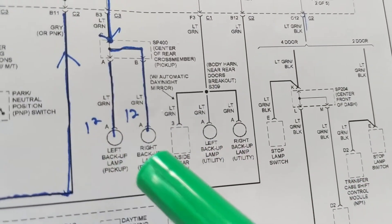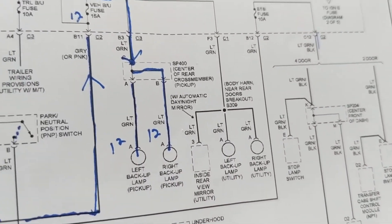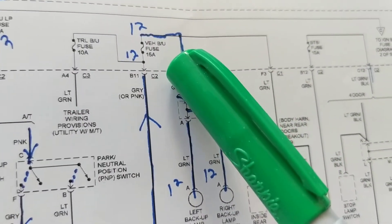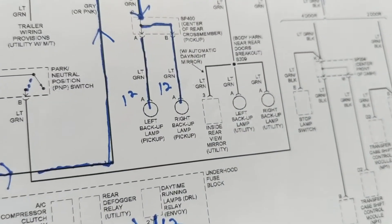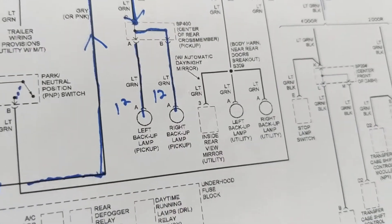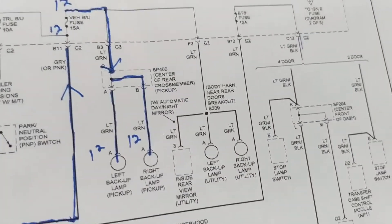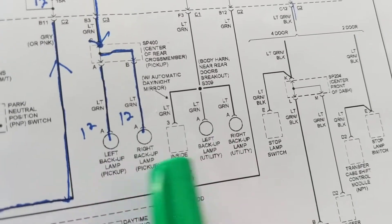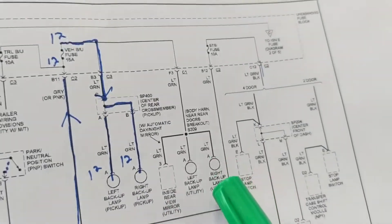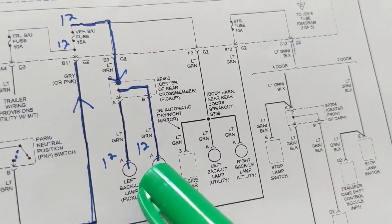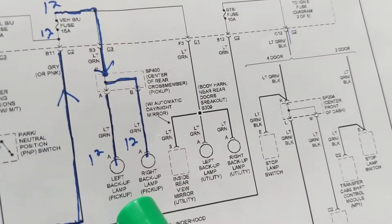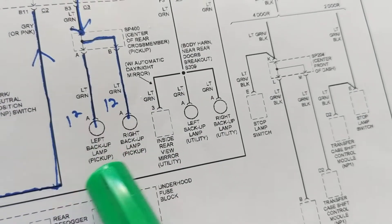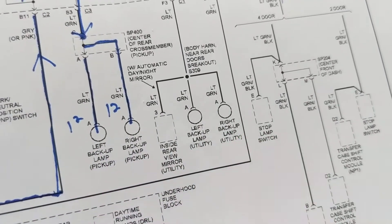Coming over here to a light green wire, we reach the left backup and right backup lamp — so it looks like we're going the right way. To find the fuses, you need both the 15-amp fuse and the 25-amp fuse. But be aware: if you have a pickup you follow one line, and if you have a utility you follow a different line. Different models and variations of the vehicle have different lines, so if I have a utility, I disregard the pickup line and come down to the utility lines.